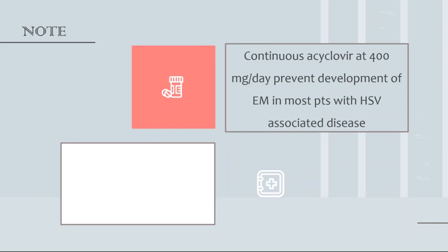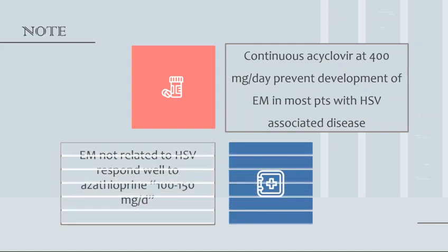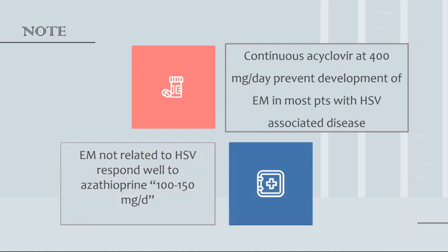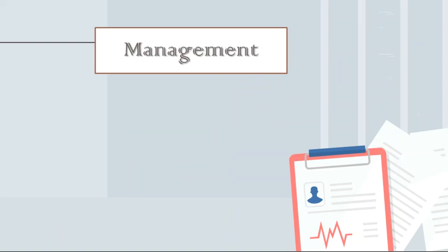Acyclovir will prevent the development of erythema multiforme in most patients with herpes simplex virus-associated disease. For erythema multiforme not related to herpes simplex virus, it responds well to azathioprine. If acyclovir is given but doesn't help, I can give azathioprine 100 to 150 mg per day.